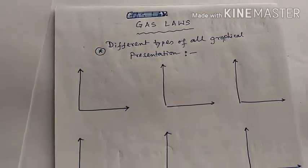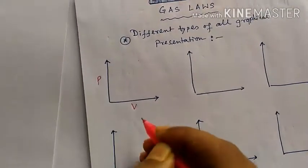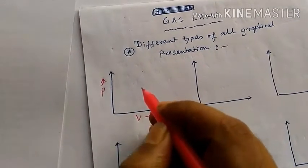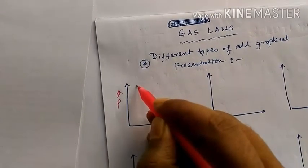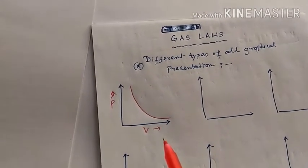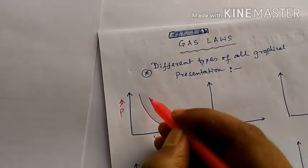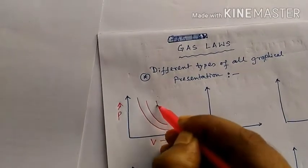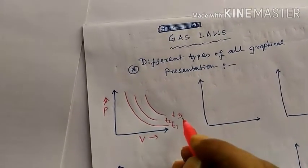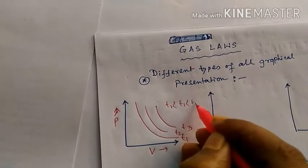We are drawing the P versus V graph. In the P vs V graph you can see this is actually a hyperbolic structure. At constant temperature, if we draw at different temperatures T1, T2, and T3, we get different hyperbolic curves where T1 is less than T2 is less than T3.